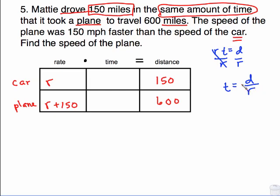What this is telling me is that all I have to do to fill in these two boxes for time is put the distance over the rate. So I'm putting the 150, which is the distance, over the rate. I'm going to do the same thing on this row, but the distance of 600 over the rate of R plus 150. And now I'm going to use this idea about the same amount of time. So I take the time for the car, which is 150 over R, and I set that equal to the time for the plane, 600 over R plus 150.